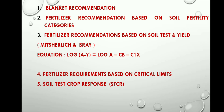The third approach is fertilizer recommendation based on soil test and yield. This approach was developed by scientists Lees and Brain. They tried to find a relationship between percentage yield, soil condition, and fertilizer application — what fertilizers we need to add, what the target yield should be, and how much the soil is contributing to the crops and how much nutrients the plants can obtain from the soil.